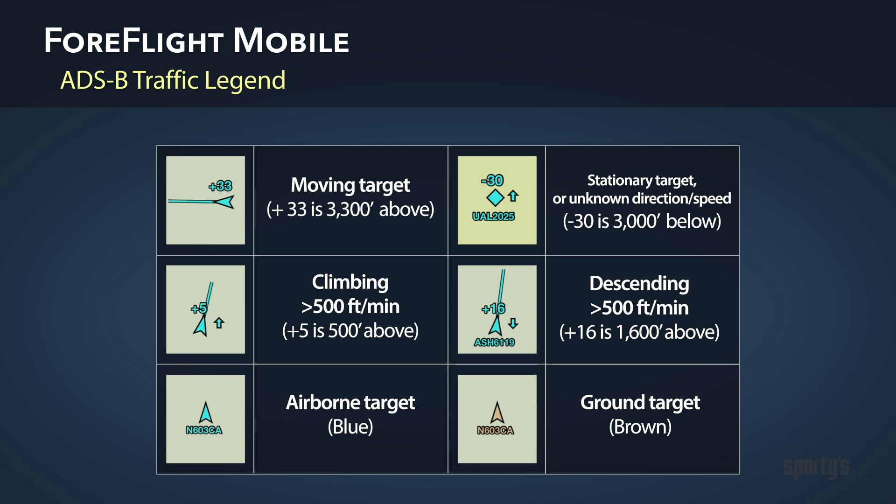Moving targets are shown with an arrowhead pointing in the direction the aircraft is moving, while stationary targets are shown with a diamond. Airborne targets are blue, and ground traffic is brown.